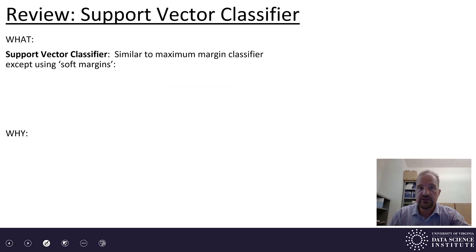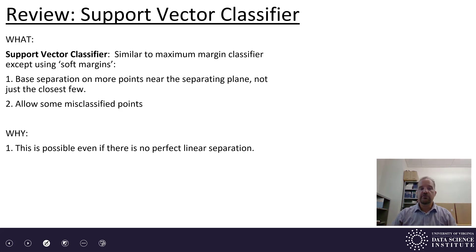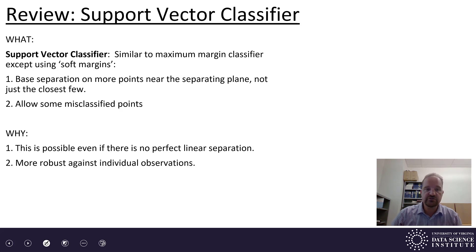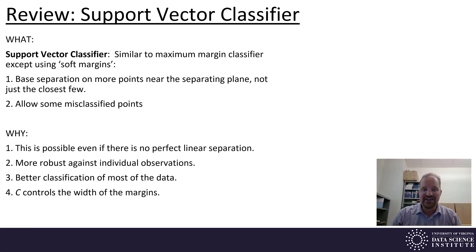In review, in this video we've talked about the support vector classifier, which is similar to the maximum margin classifier except we use soft margins. It's based on the separation of more points near the separating hyperplane, not just the closest few that lie on the margin, and it allows for some misclassified points. This allows us to do separation even if there isn't a perfect linear separation. It's more robust against individual observations because the separating hyperplane is not computed just off the closest couple of points, but all those around the margins, allowing better classification of most of the data. We also talked about the parameter C, which is the most important parameter — it controls the width of those margins. Thank you very much for watching.